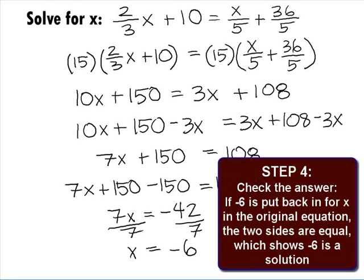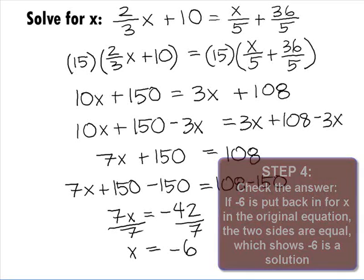In Step 4, we want to check our answer. Note that if you put negative 6 back in for x in the original problem, the two sides will be equal, which shows that negative 6 is the solution to our problem.